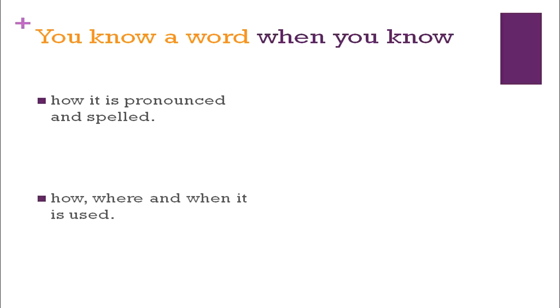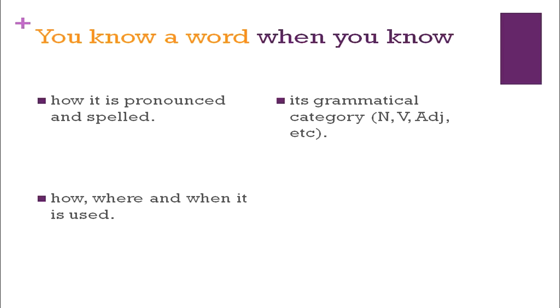You know a word when you know how it is pronounced and spelled, how, where and when it is used. I cannot say I know a word when I don't know how to use it. I must understand its grammatical category — whether it is a noun, verb or an adjective. Then only can I say I know a word, and I must know where to use it.